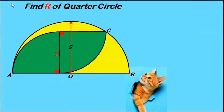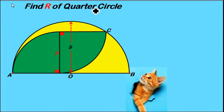Welcome back to our channel ladies and gentlemen. Today we want to start with this simple geometry problem. You've been given two inscribed quarter circles and the yellow semi-circle, and you've been told to find the radius r of the quarter circle.